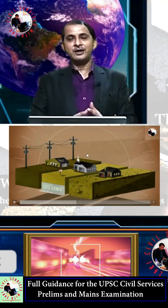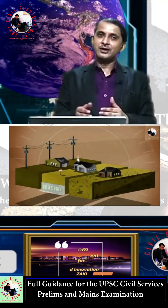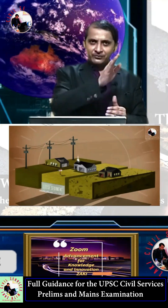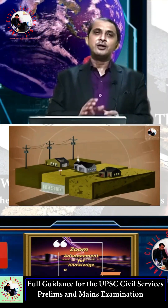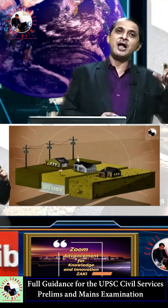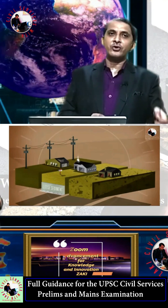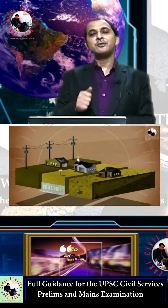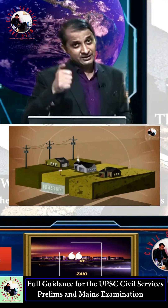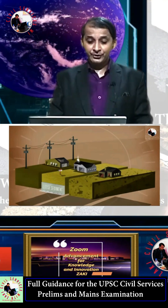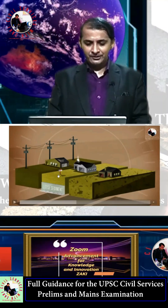Here we see the types of earthquake waves and the impact of all four wave types on the earth's surface and buildings — specifically which waves are most dangerous and which are less dangerous for humans and humanity.